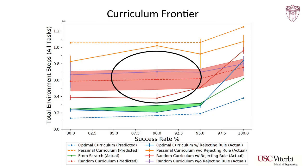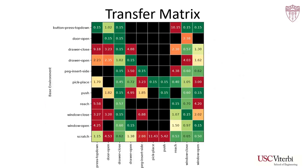We've shown that given an optimal curriculum tree, iterated transfer can improve sample efficiency. However, finding the transfer cost matrix which we use to compute the optimal curriculum tree itself required running every possible transfer, as well as training each task from scratch. Clearly, this prohibits using this method in practical cases.